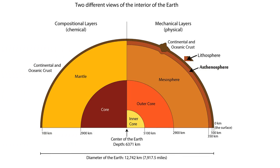Modern earth is made up of layers. Two types of layers we learn about in order to understand plate tectonics. The first one is the compositional layer and the second one is the mechanical layer. There are primarily three compositional layers to the earth's surface: the crust, the mantle, and the core. It is important to understand that the compositional layer refers to the materials or elements that the earth is made of.